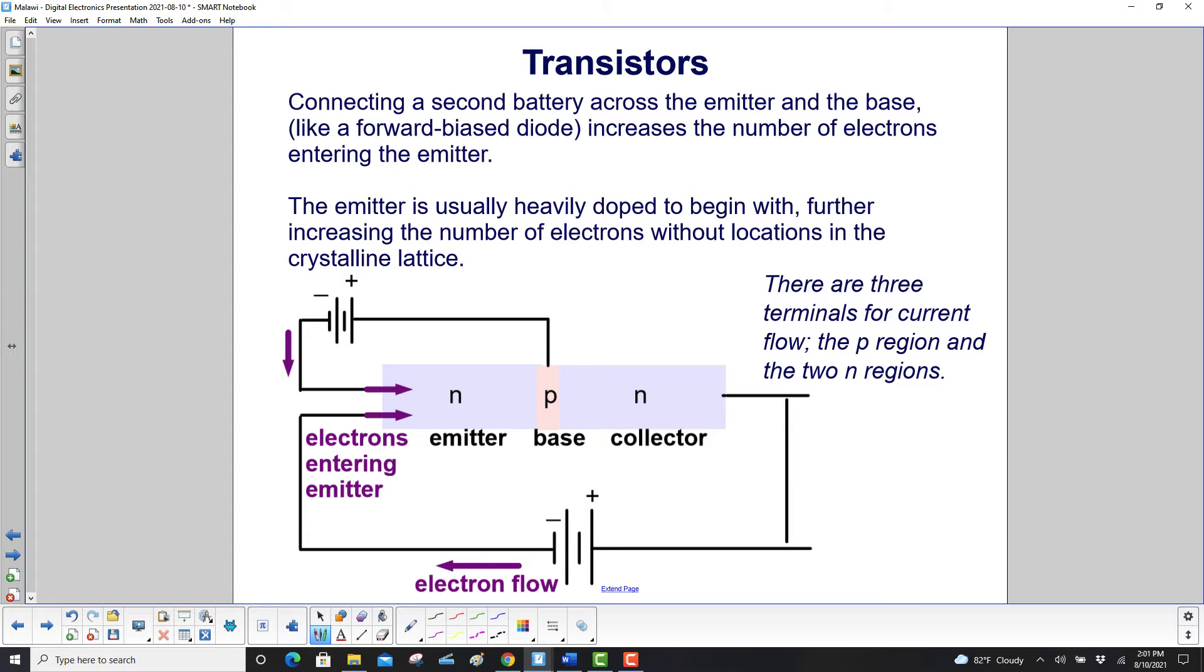Connecting a second battery across the emitter and base, like a forward-biased diode, increases the number of electrons entering the emitter. We're showing electron flow here. Remember, the electrons are really flowing; conventional current is just a convention to analyze circuits with. The emitter is usually very heavily doped, further increasing the number of electrons without locations in the crystalline lattice. These electrons come from the big battery, and the smaller battery on top adds to it. Note there are three terminals for current flow: the P region and the two N regions.